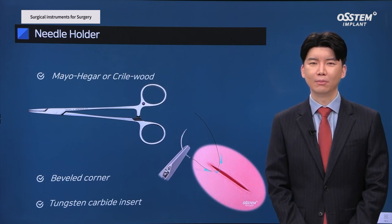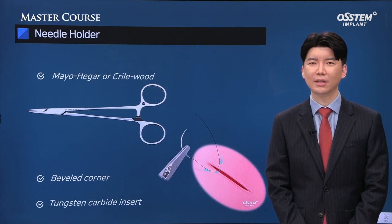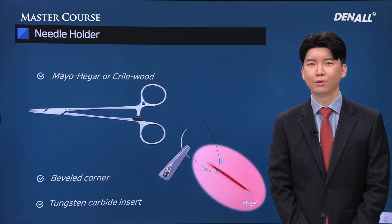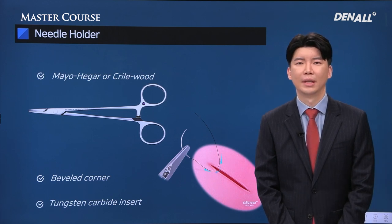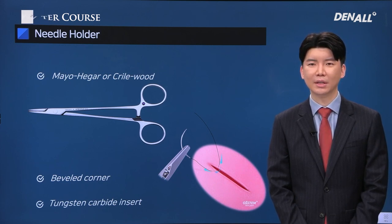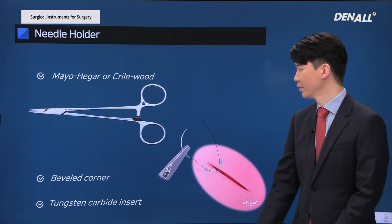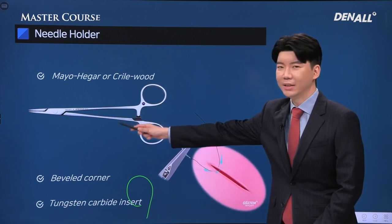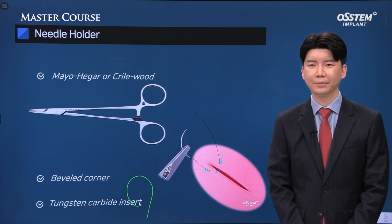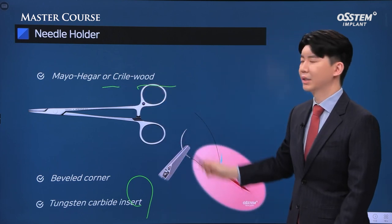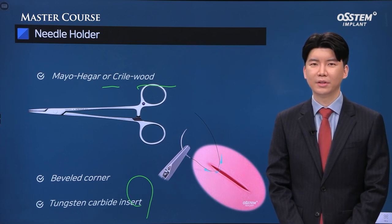All steps within implant surgery are important, but personally I believe suture is most important. It has an immense impact on the surgical result and takes up about half of the entire surgical time. We need to choose the right needle holder. A good needle holder must have a tungsten carbide insert, and the area where the beaks meet should have a beveled corner. The needle holders that satisfy these requirements are the Mayo Hecker and Krillwood needle holders.